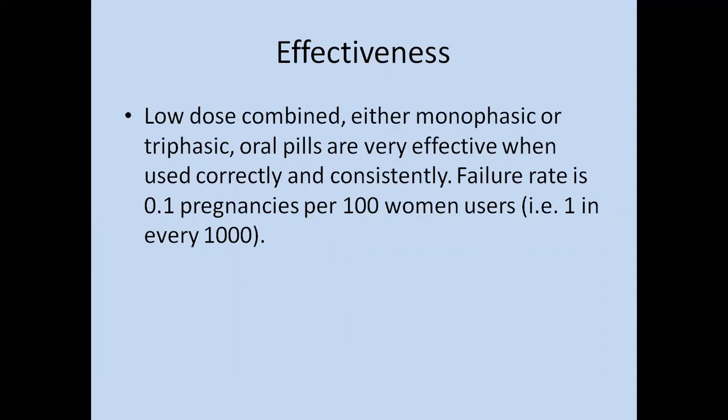Regarding effectiveness: low-dose combined pills, whether monophasic or triphasic, are very effective when used correctly and consistently. The failure rate is very low — 0.1 pregnancies per 100 women users per year, or 1 in every 1000 women.